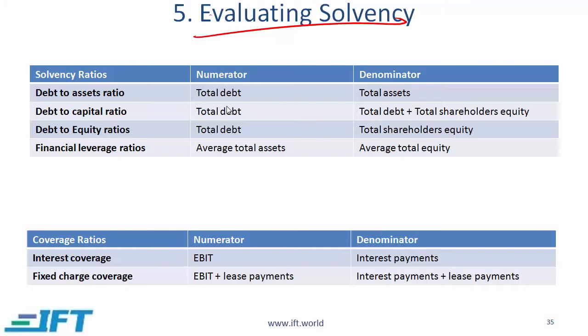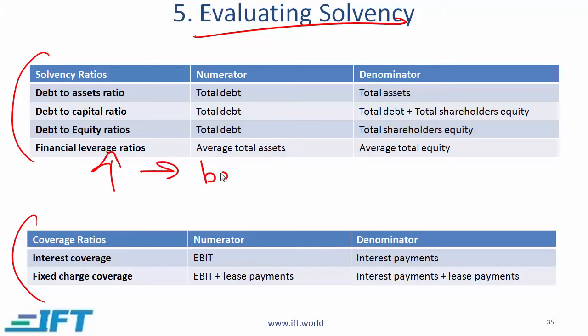Evaluating solvency means assessing a company's ability to meet long-term obligations. You look at solvency ratios such as debt-to-assets and debt-to-capital. A high debt-to-asset ratio means a lot of debt relative to assets, which is generally bad. These ratios need to be viewed in the context of the specific industry of that company.